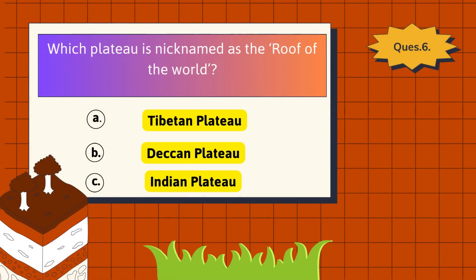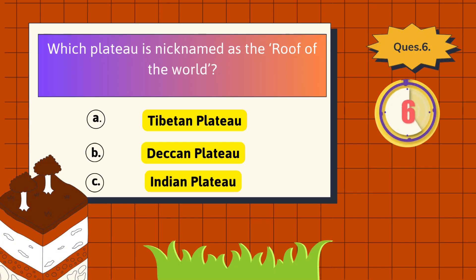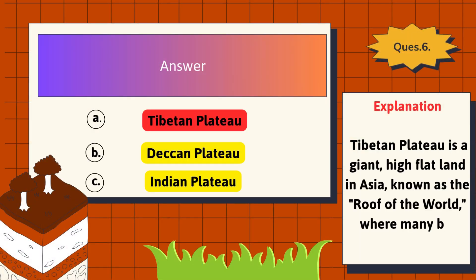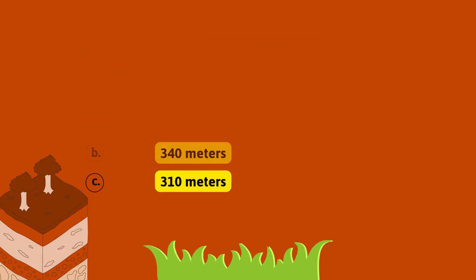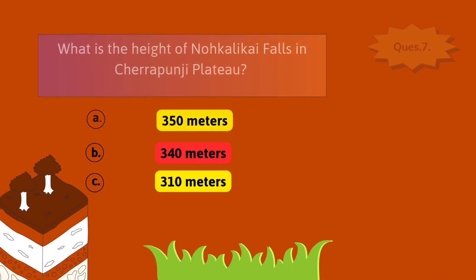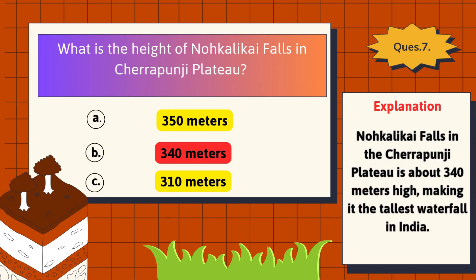Which plateau is nicknamed the Roof of the World? The correct answer is the Tibetan Plateau. The Tibetan Plateau is a giant, high, flat land in Asia known as the Roof of the World, where many big rivers begin. What is the height of Nohkalikai Falls in the Cherrapunji Plateau? The correct answer is 340 meters. Nohkalikai Falls in the Cherrapunji Plateau is about 340 meters high, making it the tallest waterfall in India.